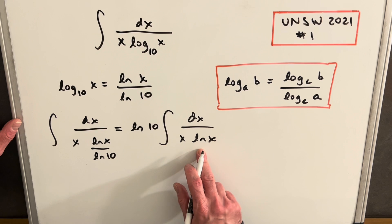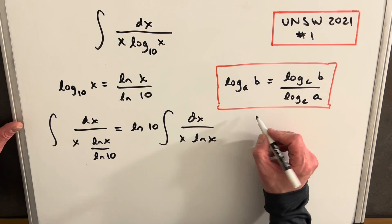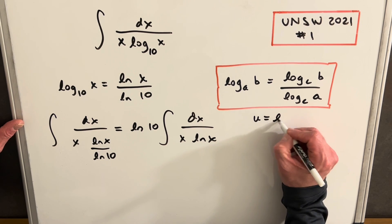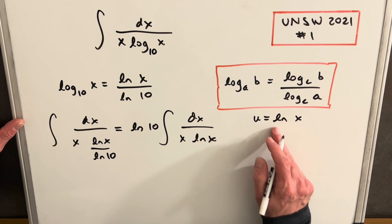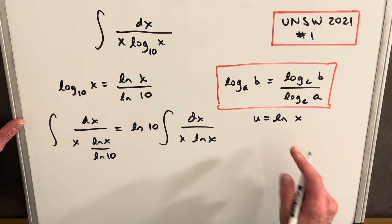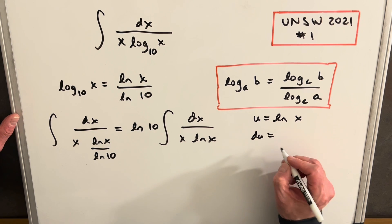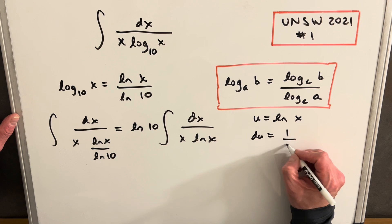This is actually not too bad because this is set up perfectly for a u substitution that we can do really quick. We're going to say u equals ln x. Then if we take the derivative, du equals 1 over x dx.